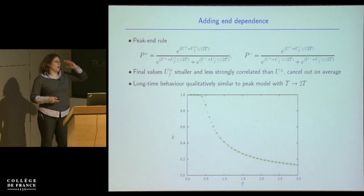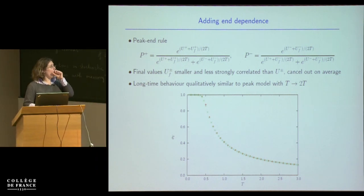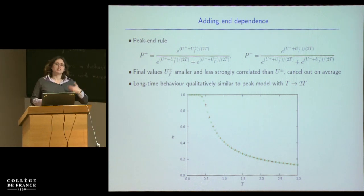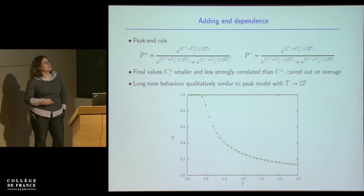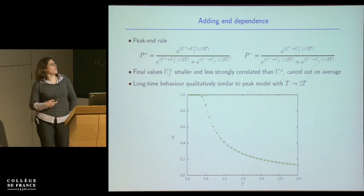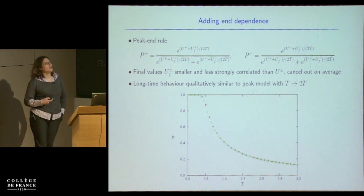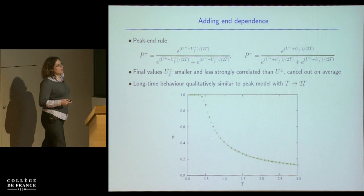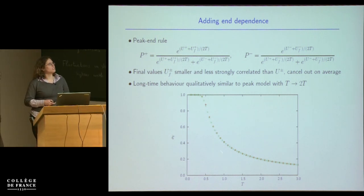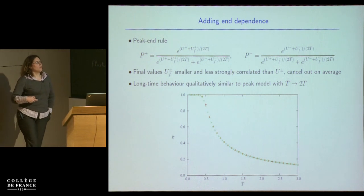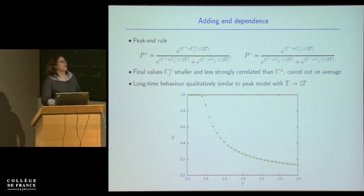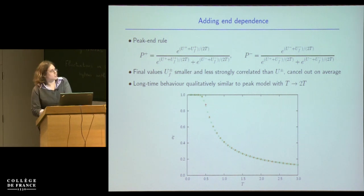If you were paying attention, you might say: you told us about the peak-end model but the model you showed only had dependence on the peak. It turns out that in this particular model it doesn't make very much difference if you add some dependence also on the end — the last value of the utility — because the final values of utility are typically much smaller than the maximum and much less strongly correlated, so they look like added noise in the peak version of the model. I show the same plot of standard deviation of velocity against noise: the red points are a model with dependence also on the end, and the green points are a model with dependence only on the peak but with double the value of noise. The two things look very similar in terms of this quantity, although other correlation functions will look different.